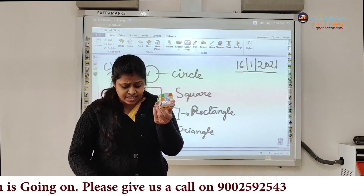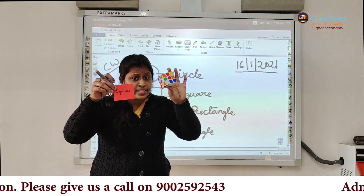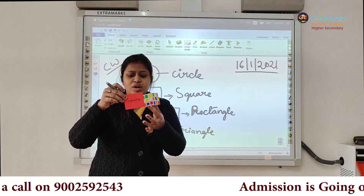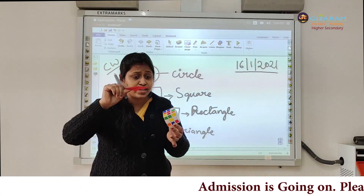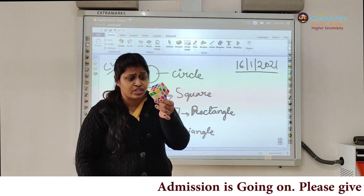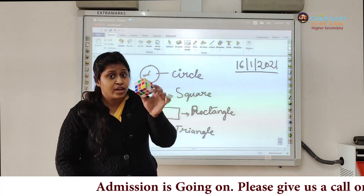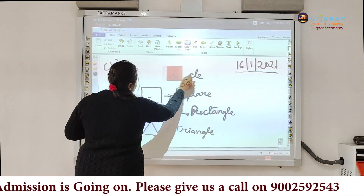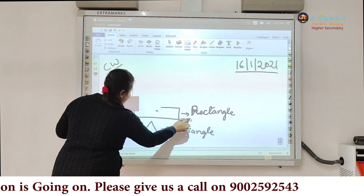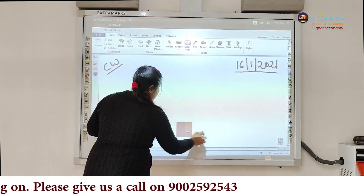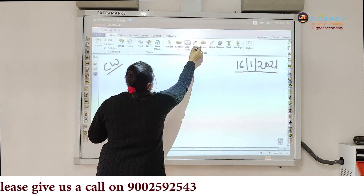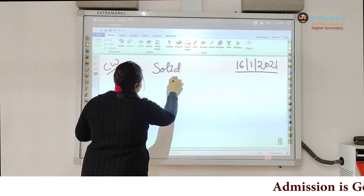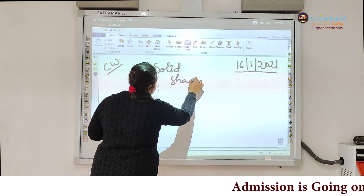What is this? Is this square and this Rubik's cube the same? No. So this is a flat object and this is a solid object. So let me tell you children about solid objects. Today's topic is about solid objects. Let's read about solid shapes — S-O-L-I-D S-H-A-P-E-S.